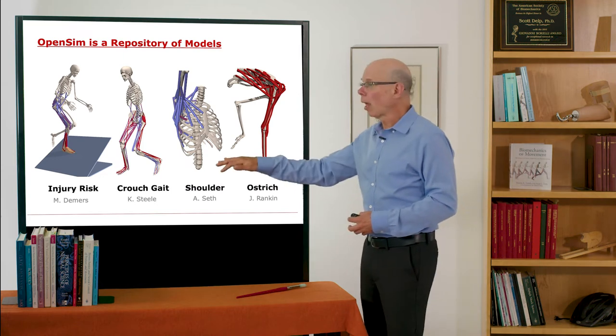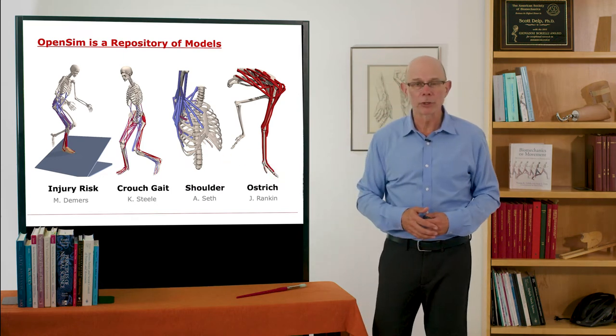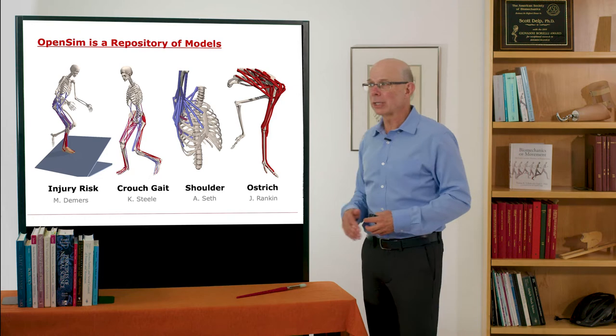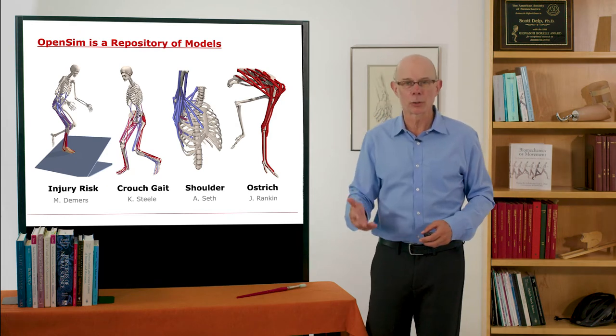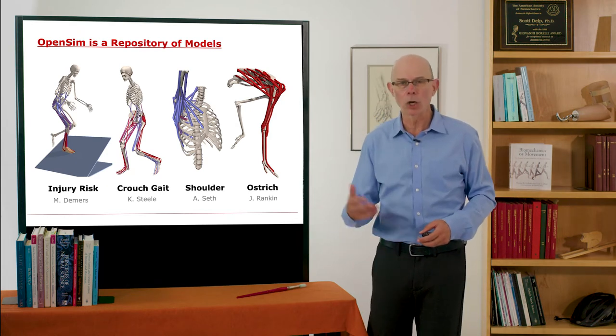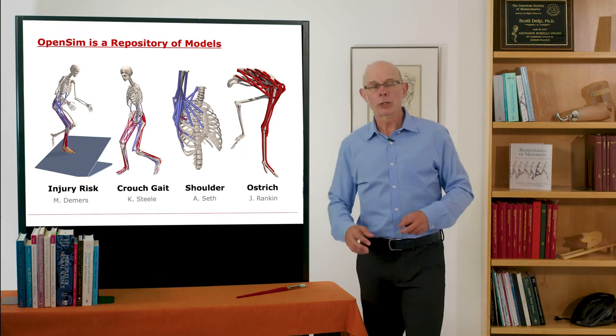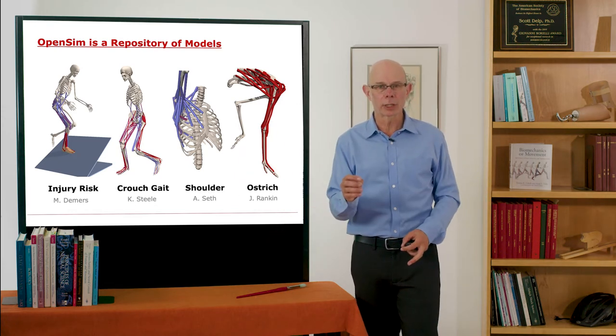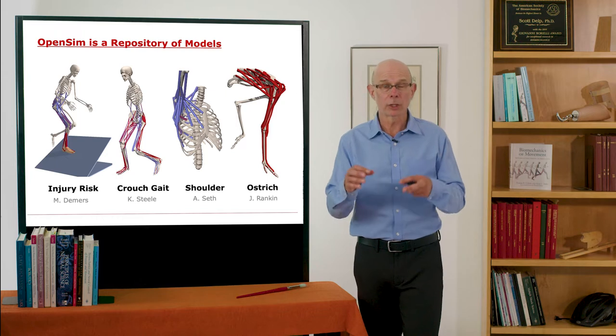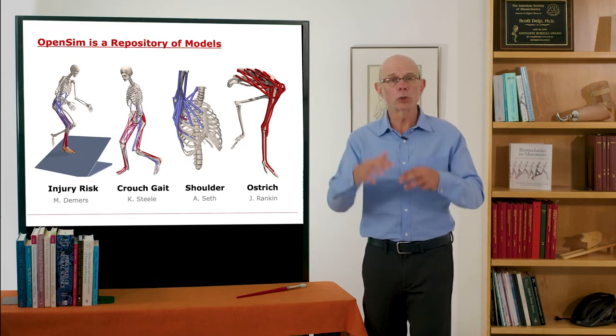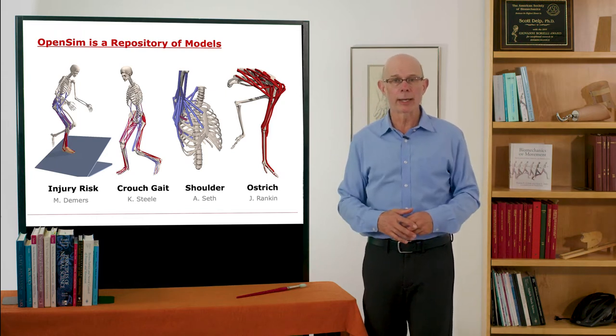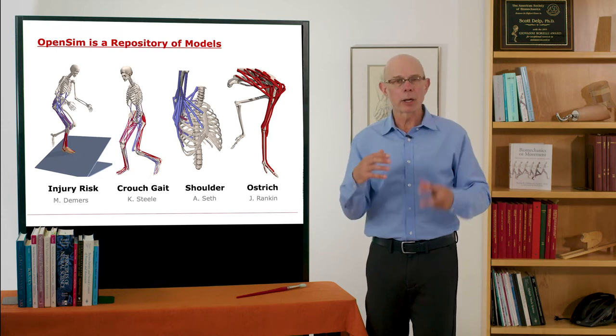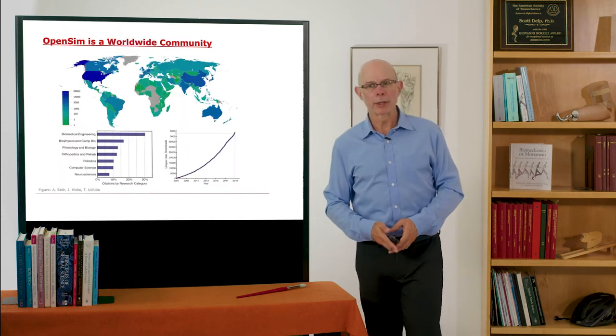And models of various animals, including ostriches, tyrannosaurs, chickens, frogs, mice. So there's this whole library of models that if you're interested in a particular problem, a particular question, you may be able to go to that library on simtk.org, grab the model, and immediately get started working with it.